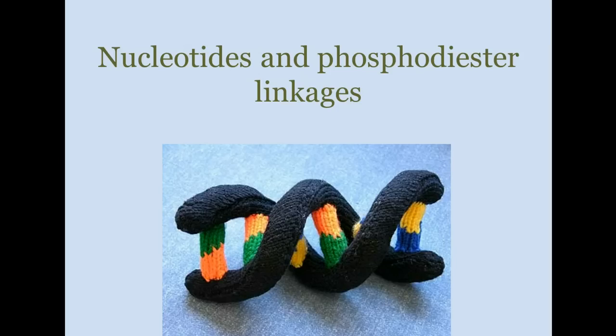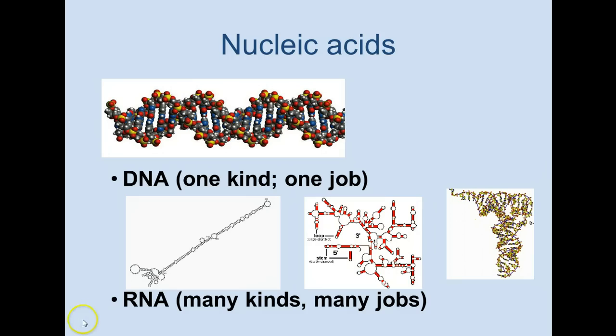This is the Bio 11 lecture on nucleotides and phosphodiester linkages. Nucleotides make up nucleic acids. Nucleic acids are either DNA — there's just one kind of DNA and it has one job — that's to encode information in the cell. Or RNA.